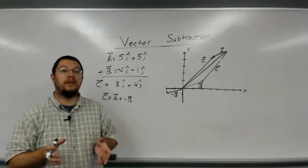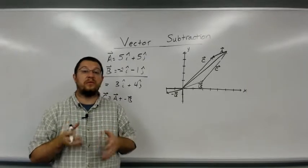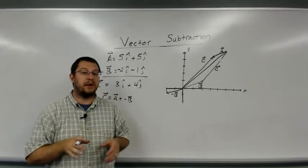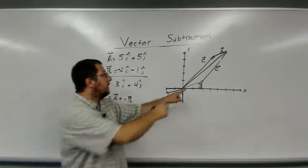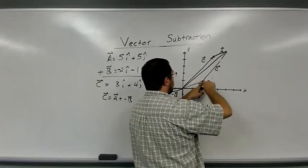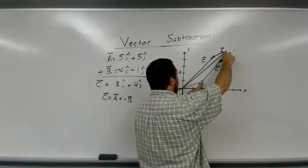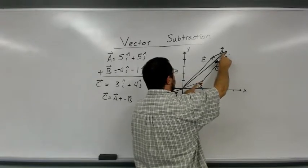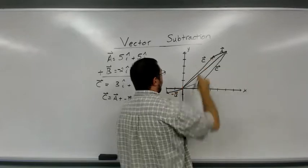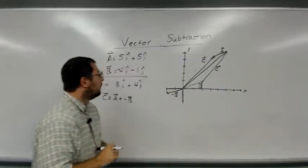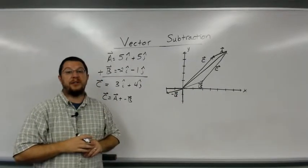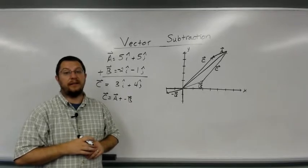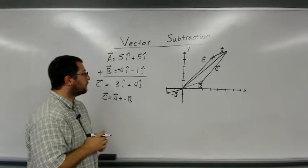And you should be able to convince yourself that all three methods, all three of these graphical methods, should agree. If I just draw a vector from b to a, then that magnitude and direction should be the same as that vector. So there are multiple ways you can go about graphing a vector subtraction.